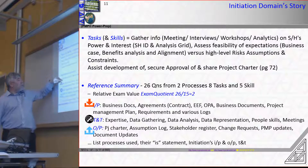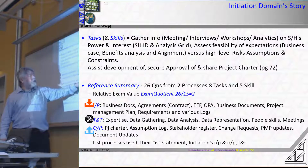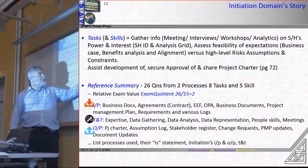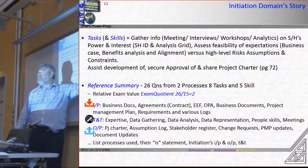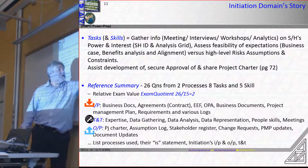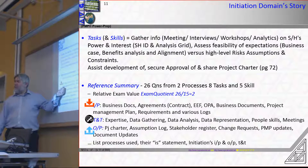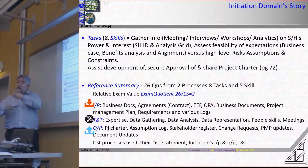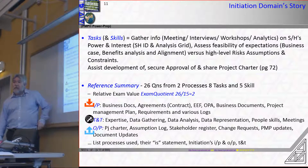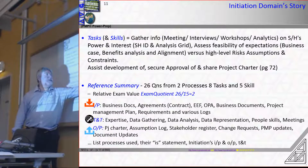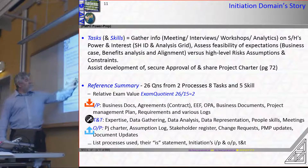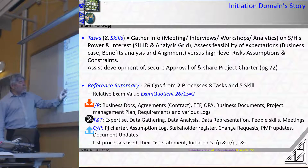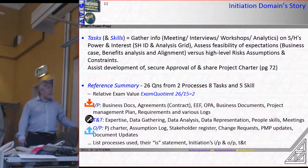What you're seeking to do is understand the breadth of questions you're going to get across the processes within that process group. Following the process group is good enough — it's not perfect, but it's good enough. For the initiating domain, the inputs are: business documents and agreements — another way of saying contracts; enterprise environmental factors — otherwise pronounced 'politics'; organisational process assets — otherwise pronounced 'templates'; business documents meaning business case and benefits realisation plan; project management plan — and yes, it could be an input because everything is cyclic and we might be initiating the second phase of the project. The more this starts to make sense to you by the time you get to your exam, the less questions you'll struggle with.